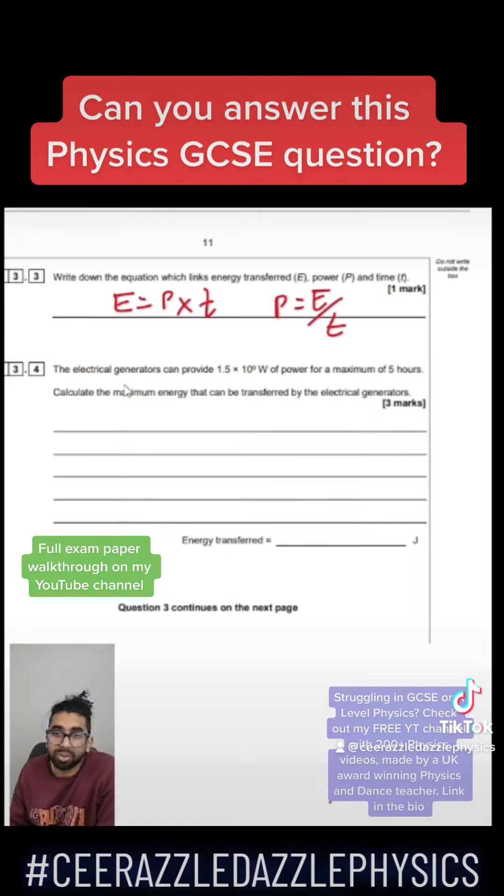Next, the electrical generators can provide 1.5 times by 10 to the power 9 watts of power for a maximum of 5 hours. Calculate the maximum energy that can be transferred by electrical generators.